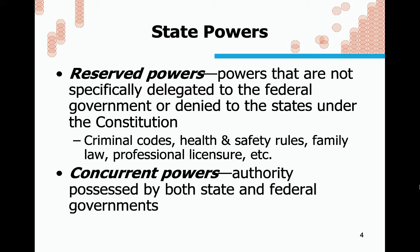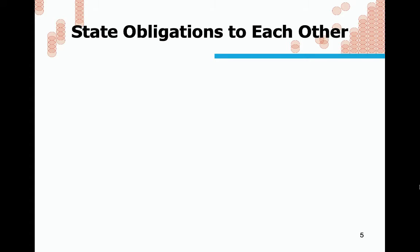We can talk about concurrent powers, which is authority possessed by both state and federal governments — unfortunately including the power to levy taxes. If you work in California, you pay income tax to the federal government and also state income tax to California. I now live in Texas, where there is no state income tax.